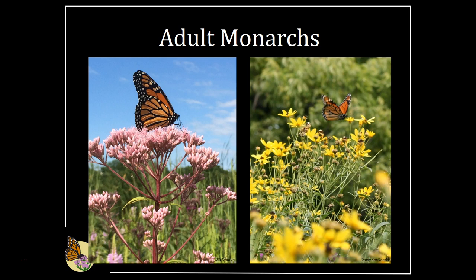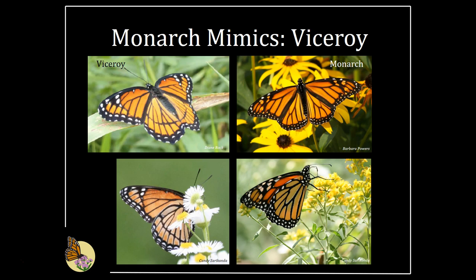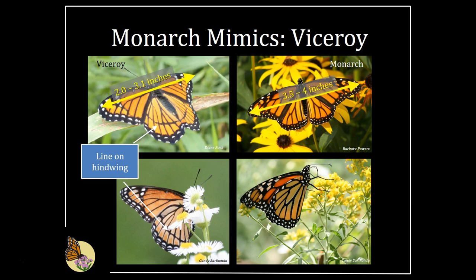Here are some profile views of adult monarchs on nectar resources and in flight. Mimicking monarchs is a good strategy for other butterflies because predators have learned to avoid monarchs due to their toxicity from metabolizing the cardenolides in the milkweed leaves they consumed as larvae. The viceroy is a widespread butterfly in North America that strongly resembles the adult monarch. Viceroys have a line across their lower hind wing, visible from both the upper and lower side, so you should be able to see this whether it's in flight or resting. Viceroys also fly differently — they fly quickly and directly, while monarchs follow a flap-flap-glide pattern and are more slow.